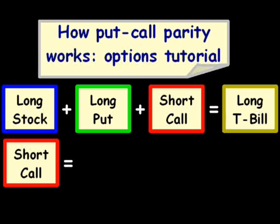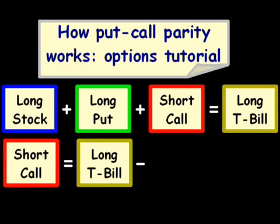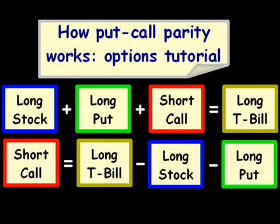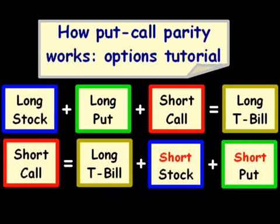I'm going to go back to that page here. What we want is to get the short call — I've got that on the left here — and we want to know what that equals on the equation side. We keep the long Treasury bill, and since we're putting the long stock on the other side of the equation, we subtract it. So we have long Treasury bill minus long stock, and then we also subtract the long put. So: short call equals long Treasury bill minus long stock minus long put, which I'm going to rewrite as long Treasury bill plus short stock plus short put.